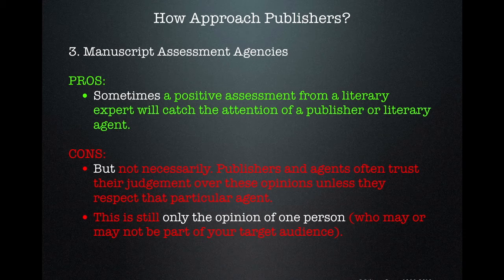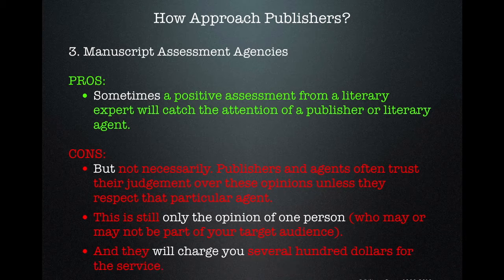Publishers and agents often trust their own judgement over these opinions unless they respect that particular assessor. This is still only the opinion of one person who may or may not be part of your target audience. Ewan Mitchell, who wrote Self-Publishing Made Simple, shares the story that with his book Feral Tracks, the advice from two senior publishing personnel was almost directly opposite to that of two reviewers who were part of his target audience. They'll also charge you several hundred dollars for the service.